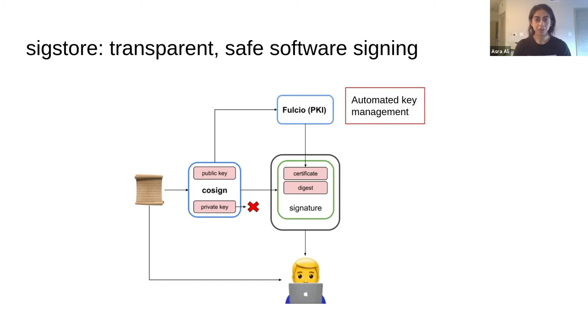What you end up with is maintainers or distributors generating ephemeral one-time use key pairs — use them to create a signature, then send the public key up to Fulcio, which signs off and generates a certificate. After code signing is done, the distributors or maintainers can just throw away their keys. There's no need for key management at all. Verifiers can simply verify based on that identity as long as they check the Fulcio piece.